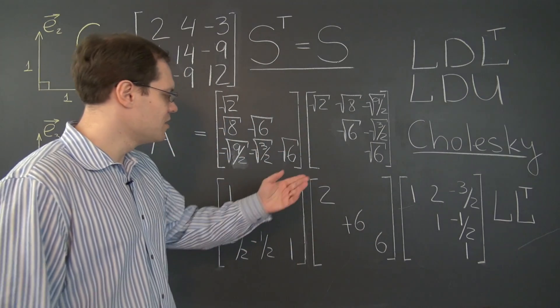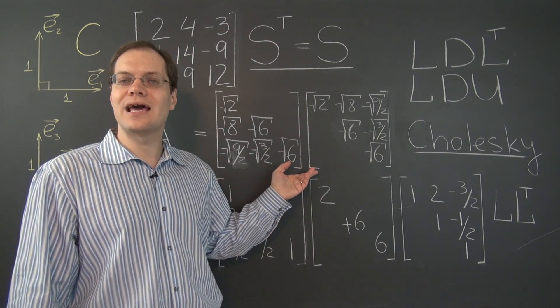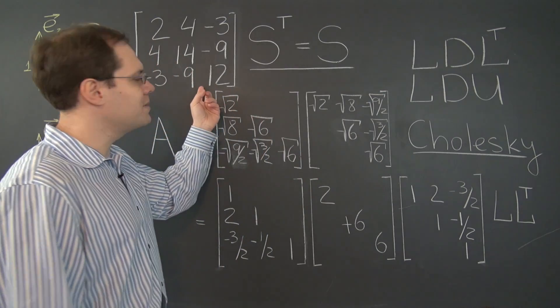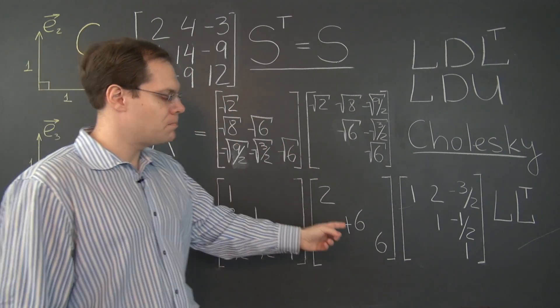So in any case, here we go. This is the Cholesky decomposition, and it only works for symmetric matrices with positive pivots.